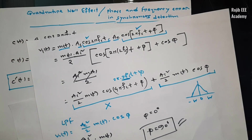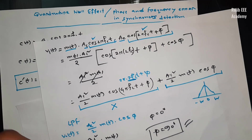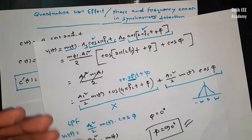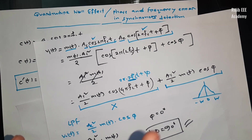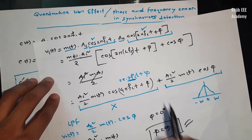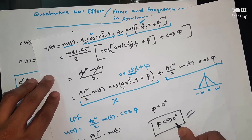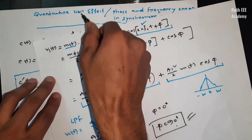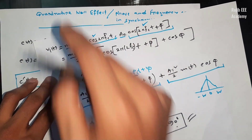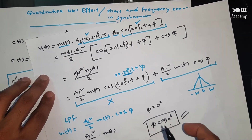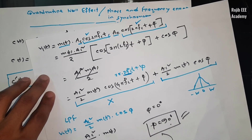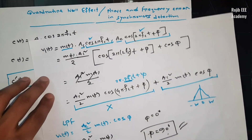Quad means 4, divided by 1. In mathematics, the total of 360 degrees is divided into 4 parts: 90 degrees, 90 degrees, 90 degrees, 90 degrees. So quadrature means 90 degrees. And null means 0 — that means at 90 degrees, the output is 0. That means no signal. So it is null. That means it is the Quadrature Null Effect: if you use 90 degrees of phase difference, you will have no message signal.